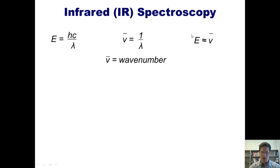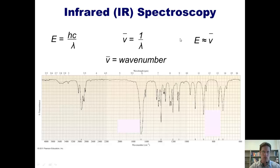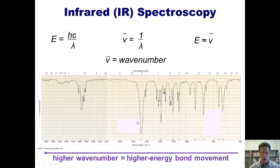If you actually look at an IR spectrum, you'll notice that the scale here at the bottom is written in wavenumbers. The units are inverse centimeters. The higher the wavenumber, the higher energy will be the bond movement that it causes.